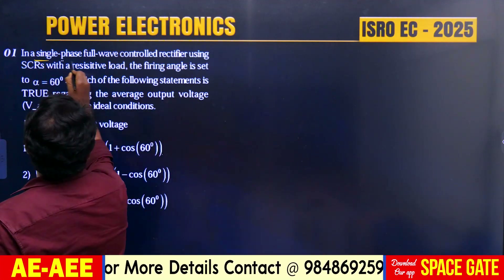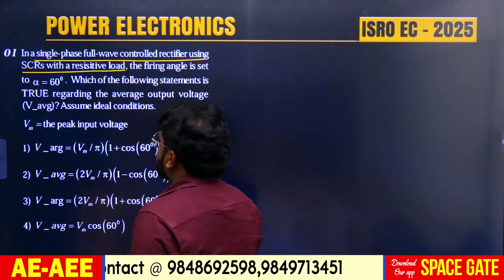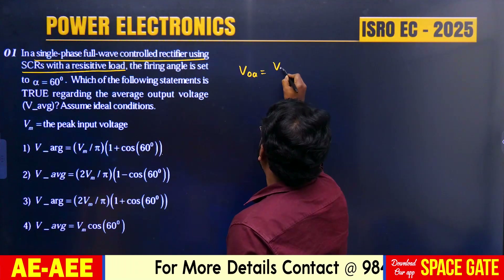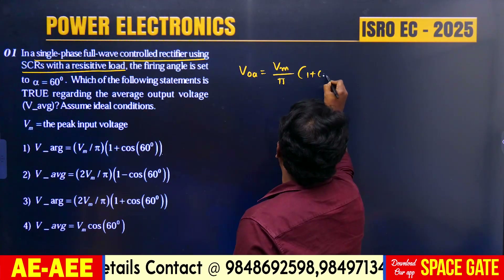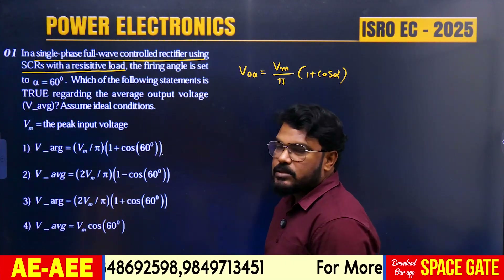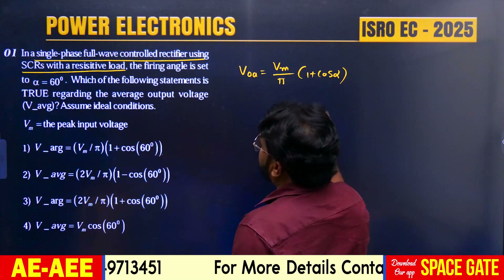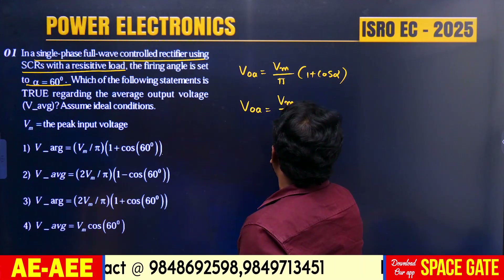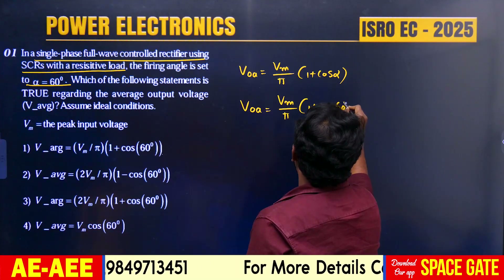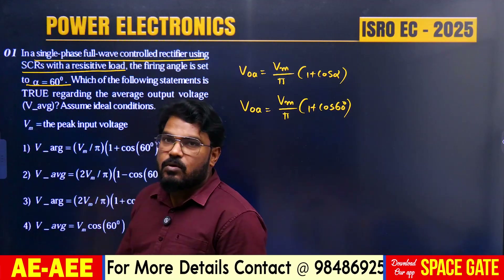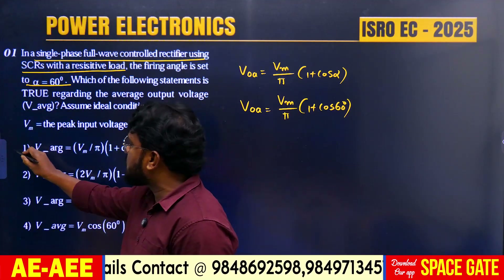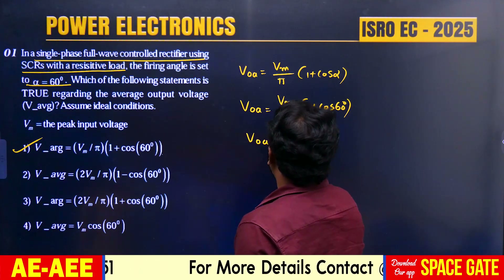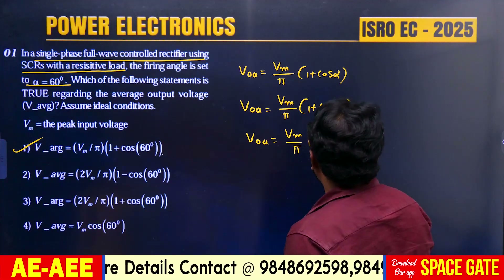Given: single-phase full-wave controlled rectifier using SCRs with a resistive load — that is discontinuous current mode. The average output voltage formula is V0_avg = (Vm/π)(1 + cos α), where α is the firing angle and Vm is the maximum supply voltage. Given α = 60°, substituting: V0_avg = (Vm/π)(1 + cos 60°). So the answer is Option 1: V_average = (Vm/π)(1 + cos 60°).